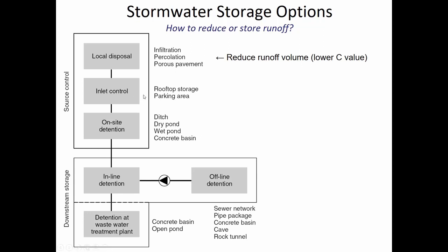The next phase, inlet control, is where you're not promoting natural absorption of water into the soil but rather an artificial absorption, even if only on a temporary basis. A green roof that can temporarily store water, or water vaults like tanks underneath a parking area — that's not as preferred as local disposal because it's just local storage. Disposal actually eliminates the problem by infiltrating water into the soil, while inlet control is slowing it down, but the water will eventually be discharged.